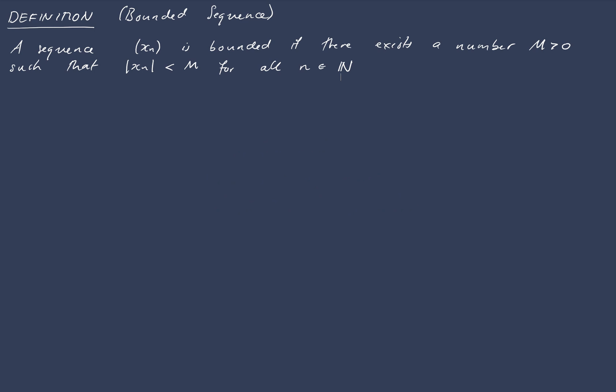So we'll start with our definition. A sequence is bounded essentially if there exists a number such that the absolute value of your sequence is less than m for all natural numbers n. Remembering that a sequence is just an ordered set of numbers indexed by the natural numbers. So what does this mean?